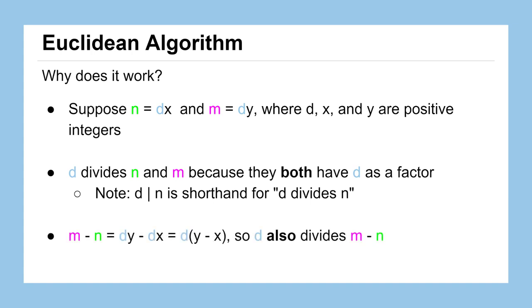One key fact for explaining why the Euclidean algorithm works: if we take the difference between m and n, substituting dy for m and dx for n, we can factor out d and we're left with d times (y minus x). This means d is a factor of m minus n, so by our definition of divisibility, d also divides the difference between m and n.